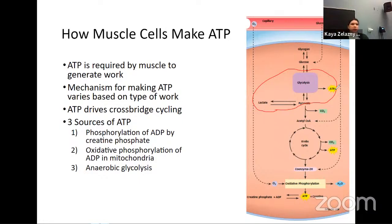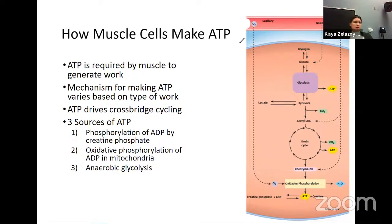We need ATP for our muscle cells because ATP was part of that cross-bridge cycle — how we allow our thin and thick filaments to slide past each other to shorten our sarcomeres and move our muscles. With different types of exercise or types of contraction, we're actually going to be getting ATP from different sources. So we need ATP to contract the muscle, but exactly how we get that ATP can differ.